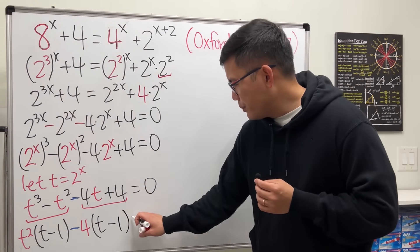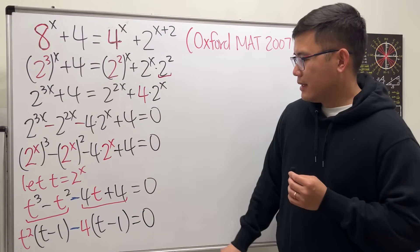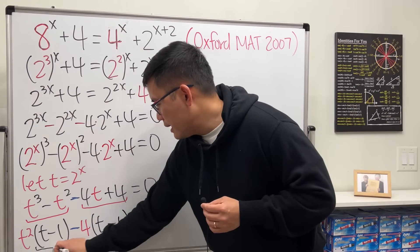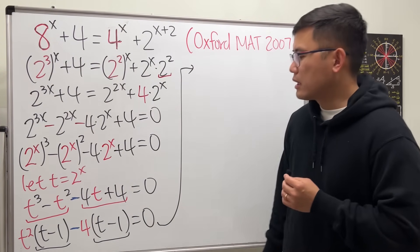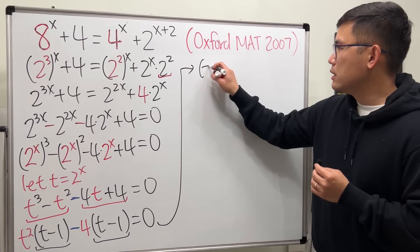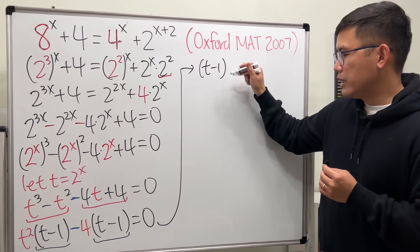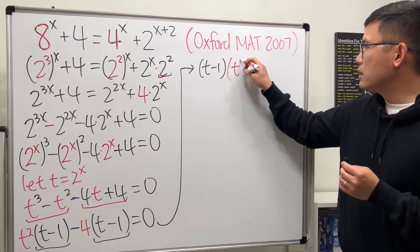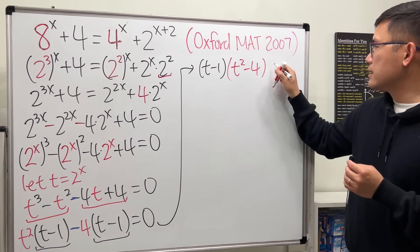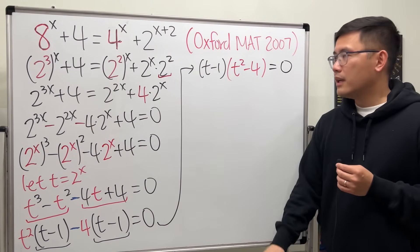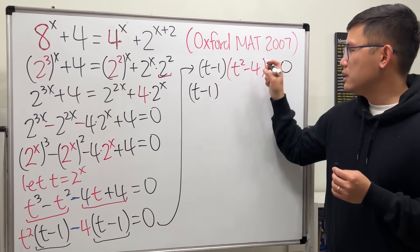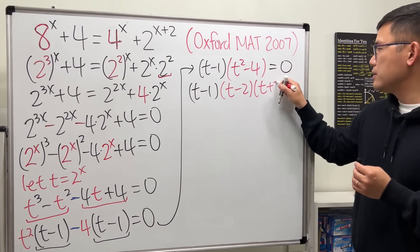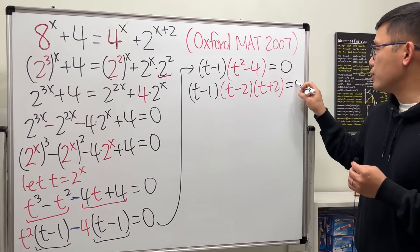Now, factor by grouping. Then, we can see that the t minus 1 is in common, so we can factor that out. And then we get t squared minus 4, and that's equal to 0. Keep factoring it. This is t minus 1. Difference of two squares. t minus 2 times t plus 2. And that will give us 0.